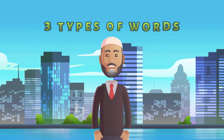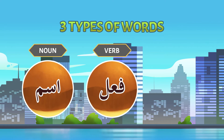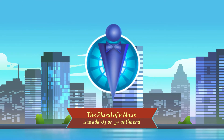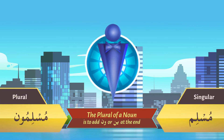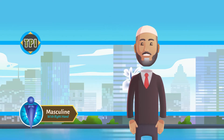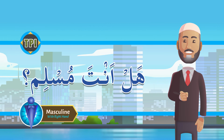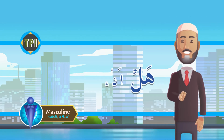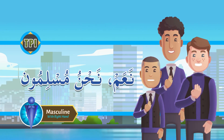We have learned that there are three types of words in Arabic: ism, fi'l, and harf. The plural of a noun is formed by adding -oon or -een at the end. For example, the plural of Muslim is Muslimoon or Muslimeen. Can you answer: Hal anta Muslimoon? — Na'am, ana Muslimoon. Hal antum Muslimoon? — Na'am, nahnu Muslim.